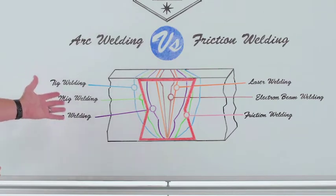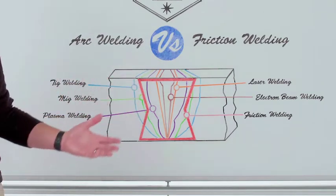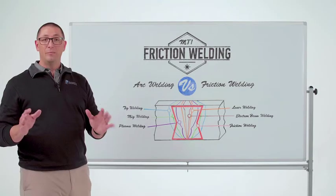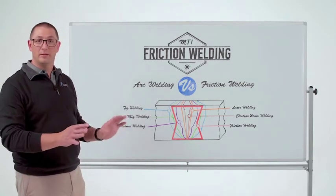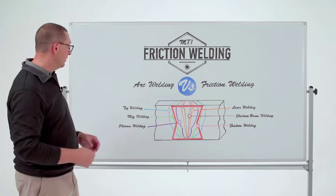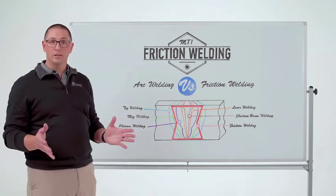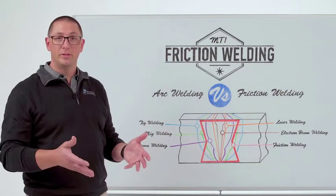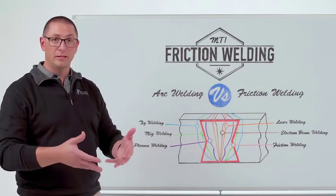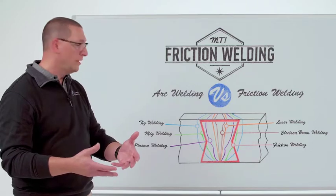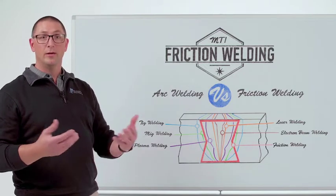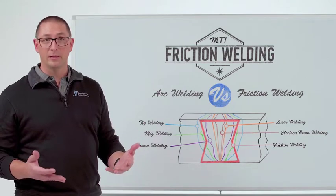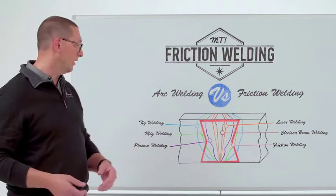We put some representative heat affected zones from different processes on the board to demonstrate some of the differences. With arc welding — TIG and MIG are good examples — you'll have a third material that is melted through some sort of energy process in between the two components that you want to join in order to make that joint. That obviously has an impact from a quality and a strength perspective.